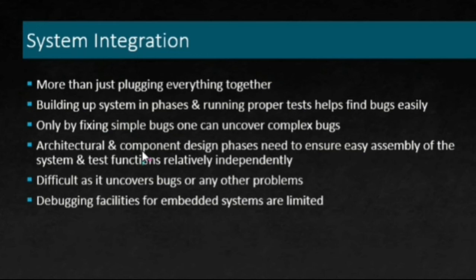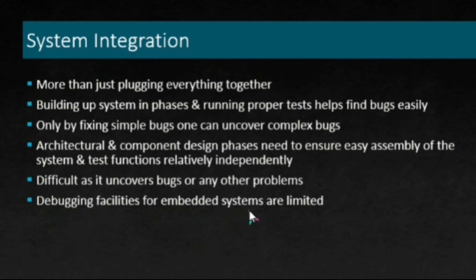To reduce the occurrence of bugs, we need to pay attention right from the beginning. Special care is to be given at the architecture and component design phases by ensuring easy assembly of the system. Independent test functions can also help. Debugging facilities for embedded systems are limited, so we have to pay more attention to uncovering and debugging bugs right from the beginning.